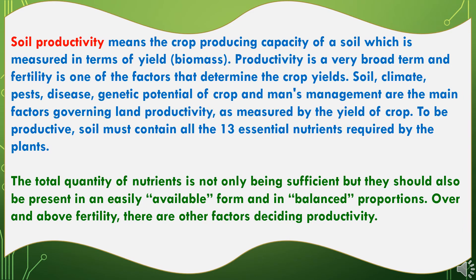Soil productivity means the crop producing capacity of a soil, measured in terms of yield or biomass. Productivity is a very broad term and fertility is one of the factors that determines crop yields. Soil, climate, pests, diseases, genetic potential of crops and management are the main factors governing land productivity as measured by the yield of crop. To be productive, soil must contain all 13 essential nutrients required by plants, present not only in sufficient total quantity but also in an easily available form and in balanced proportions. Over and above fertility, there are other factors deciding productivity.